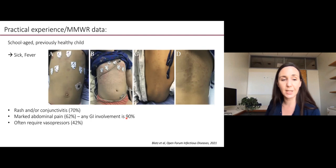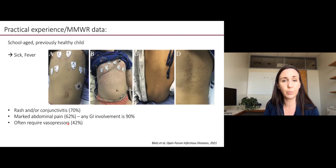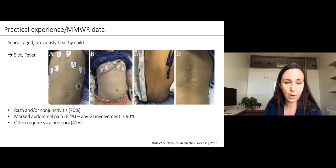That's the case definition. What we actually see in the hospital is that typically what we have is a school-aged child who is previously healthy, brought in by their parents because they are now sick and they have a fever. In the majority of these children, we either see a rash or conjunctivitis. The rash very commonly takes on this annular, like a ring-like plaque shape on the trunk. You'll often see it on the upper thighs. And these kids very often have really severe abdominal pain.